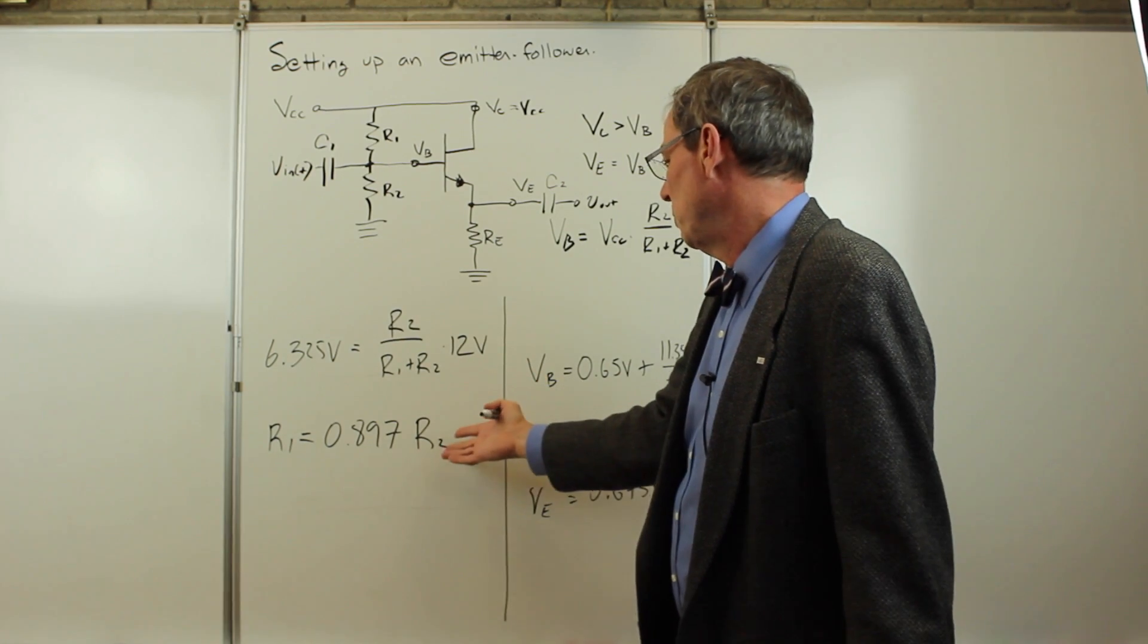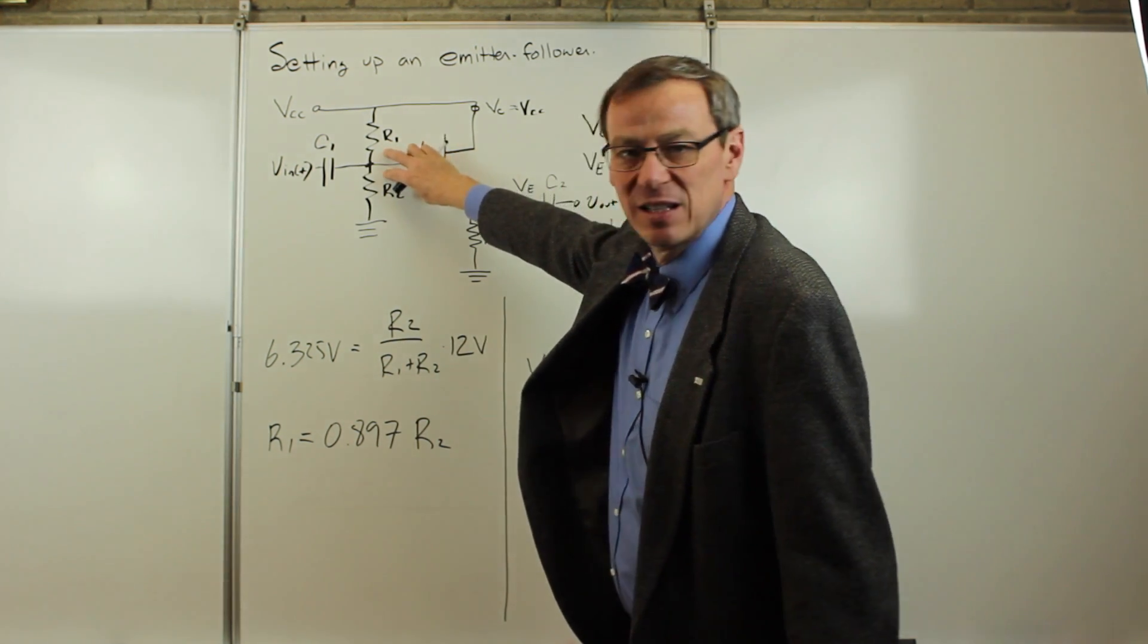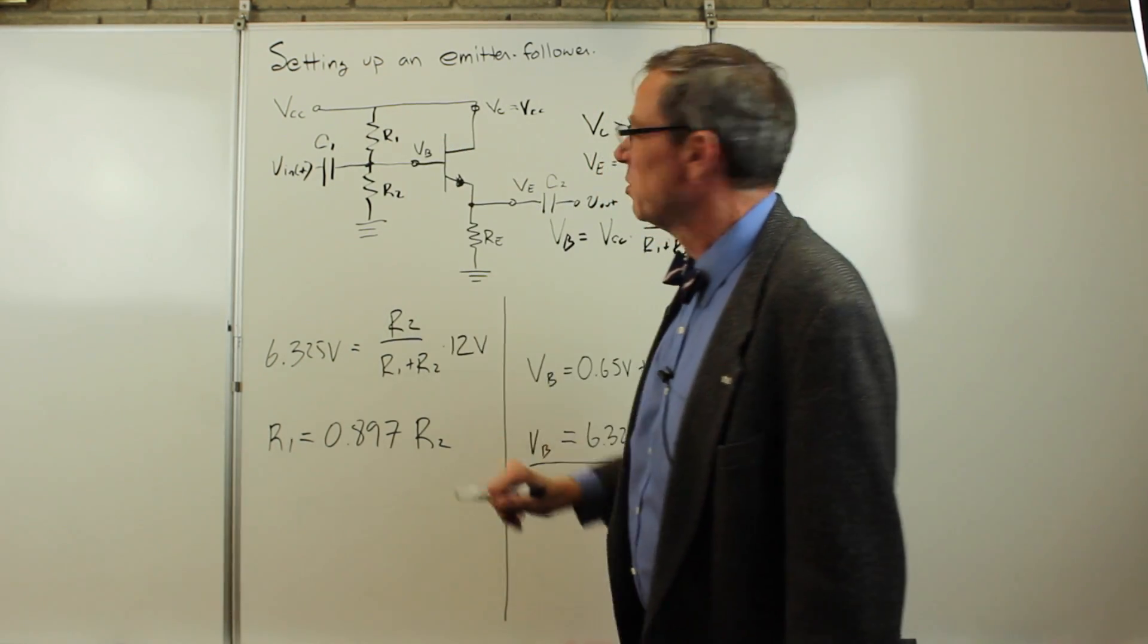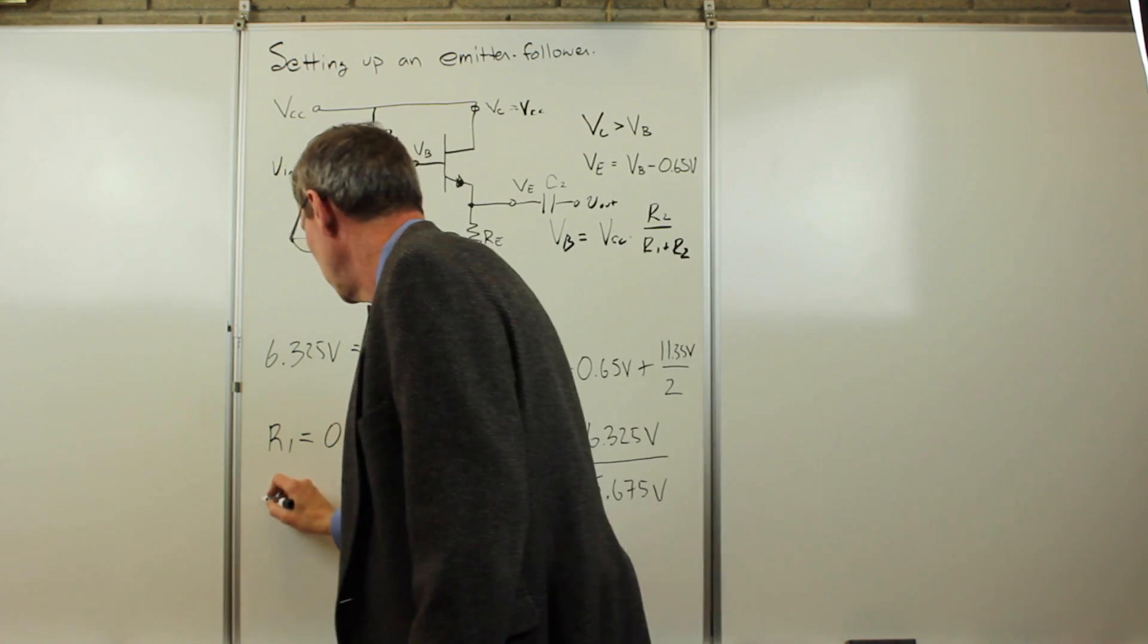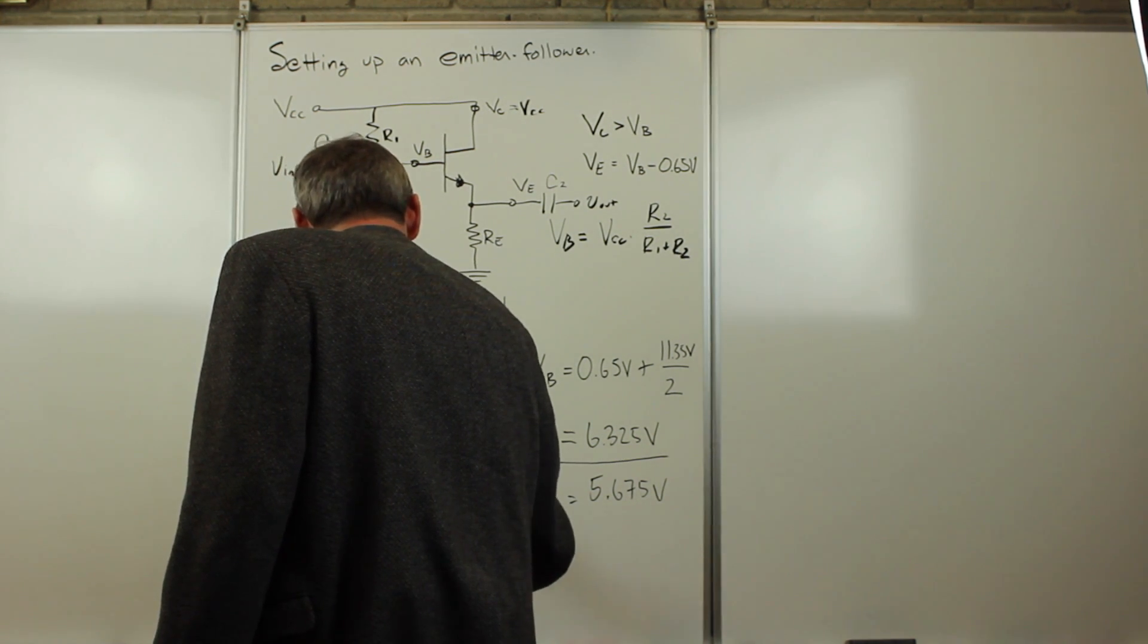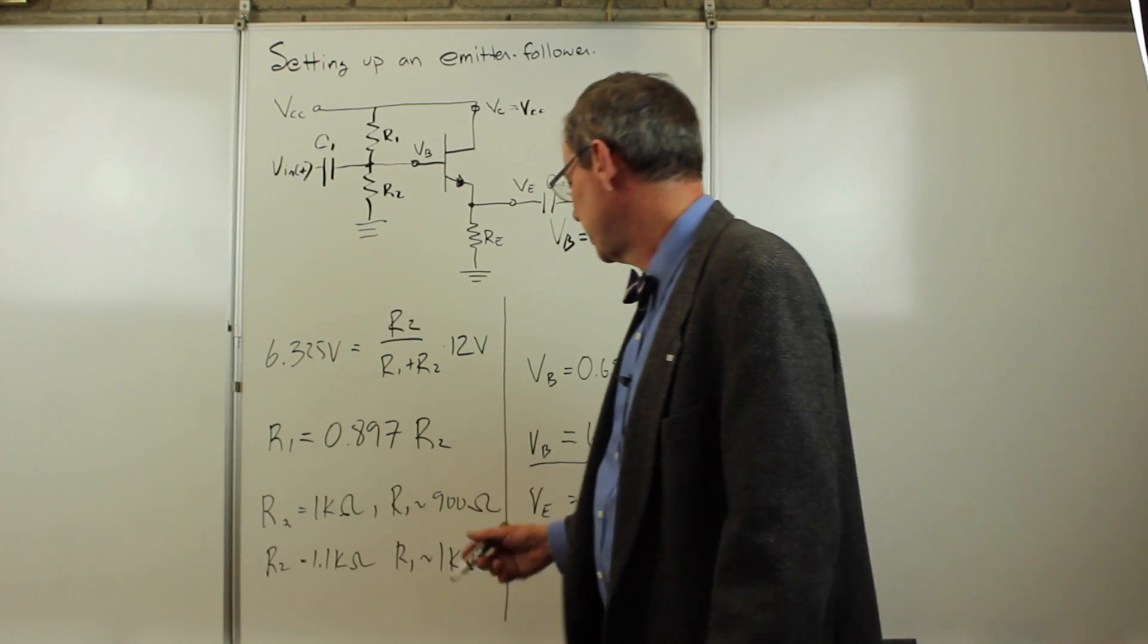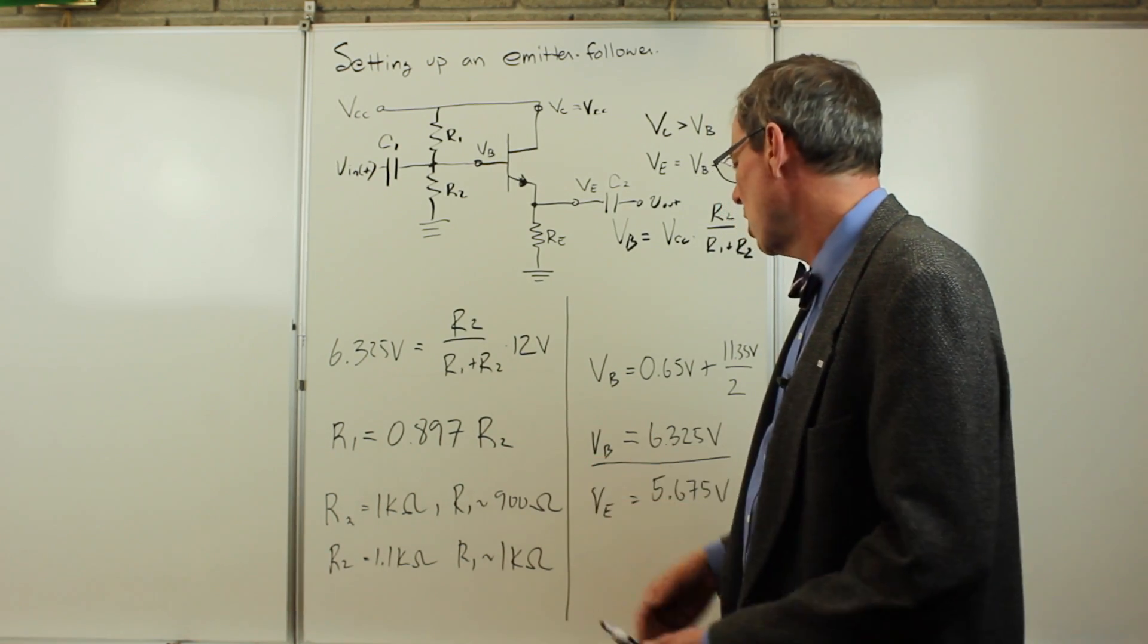At this point, any pair of resistors that satisfies that are good. One thing to keep in mind is this divider circuit acts as an input impedance to this. The output impedance is related to that input impedance divided by 100, but if this gets too big we could start hurting. So let's try to keep it small. Try to keep those resistors on the order of a kiloohm. If we choose R2 to be 1 kiloohm, R1 is about 900 ohms. If we choose R2 to be 1.1 kiloohms, R1 is about 1 kiloohm. We pretty much have to go see what we have available to build this circuit, but presumably we can pick something in this range.